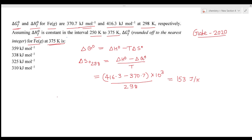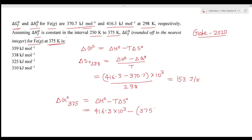Now we find ΔG° at 375 K. Since ΔH° remains constant, we use ΔG° = ΔH° − TΔS°. Substituting: 416.3 × 10³ minus 375 × 153, which gives 359 × 10³ J/mol. Converting to kilojoules per mole, the answer is 359 kJ/mol.